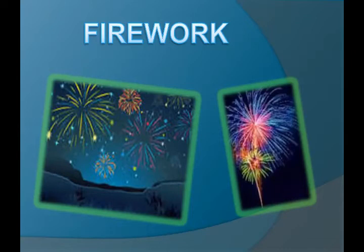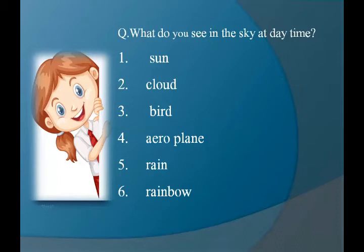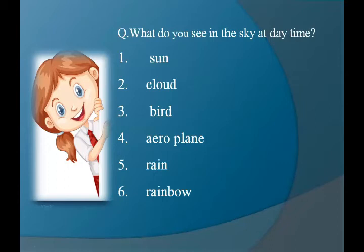Now move to the activity. The question is: what do you see in the sky at daytime? The first thing is sun. The spelling of sun is S-U-N. Sun — we see sun in the sky at daytime. What does sun give us? Sun gives us light and heat.